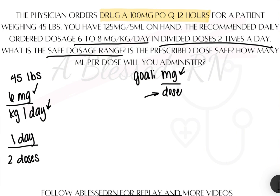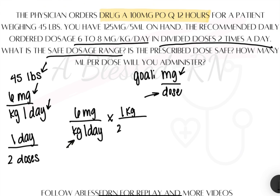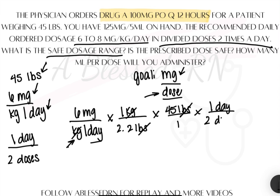Now we have all our puzzle pieces. We want milligrams on top, so I'll start with 6 milligrams on the top, and kg and day go on the bottom. I need to cancel out kg, so I'll do a conversion: 1 kilogram equals 2.2 pounds. Now kgs cross out, and I put 45 pounds on top by itself. The last step is to cancel out the day, so 1 day goes on top and 2 doses on the bottom. Everything crosses out and you're left with milligrams over dose. Multiply across the numerator, multiply across the denominator, and divide to get 61.4 milligrams per dose.